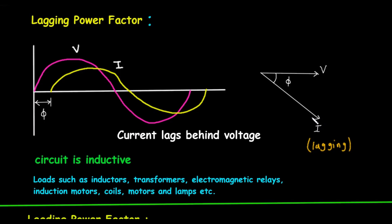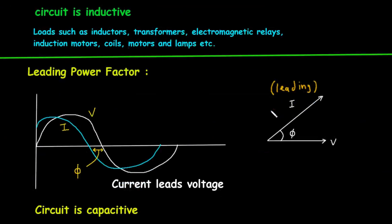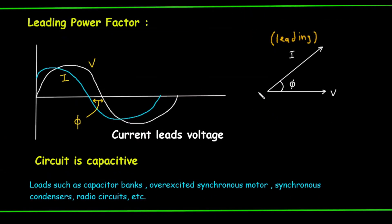Next, we have the leading power factor. This occurs when the current leads the voltage. This is characteristic of a circuit that is predominantly capacitive. Examples of capacitive loads include capacitor banks, overexcited synchronous motors, synchronous condensers, and various radio circuits. The phasor diagram for a leading power factor again shows the voltage vector, V, pointing horizontally. This time, the current vector, I, is shown pointing upwards at an angle Φ, visually representing that it is leading the voltage.